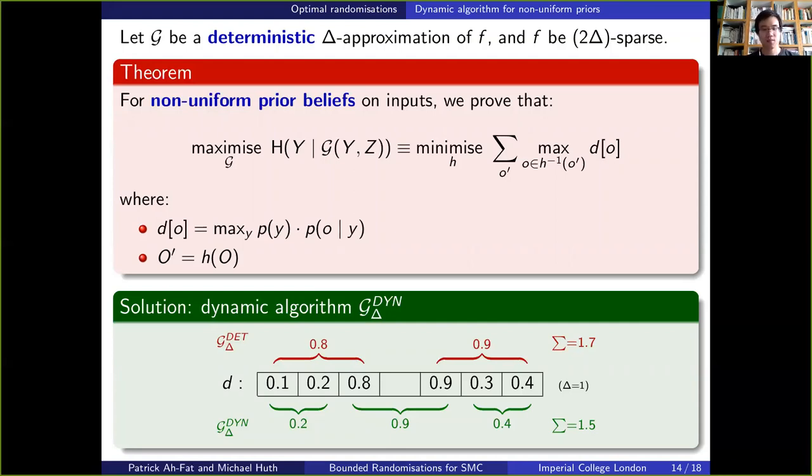And based on that illustration, I can now say that the aim of the optimization problem is to find the best combination of buckets that minimizes this sum, while keeping in mind that the length of the bucket cannot exceed 2 delta plus 1.